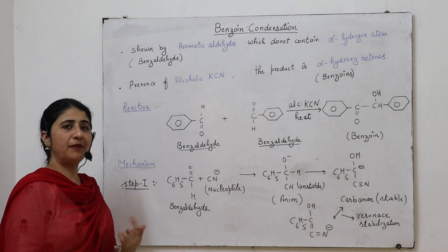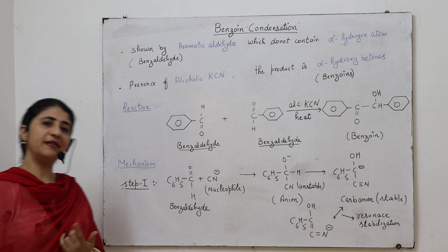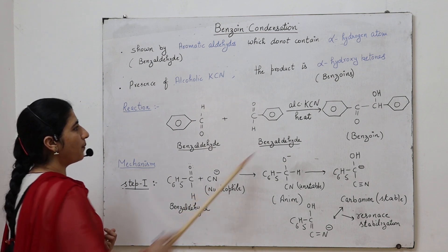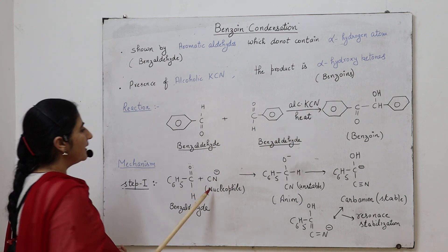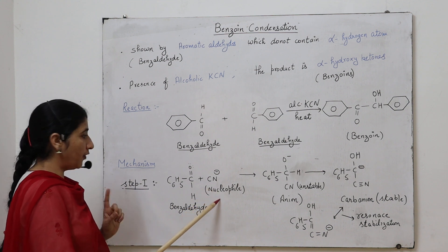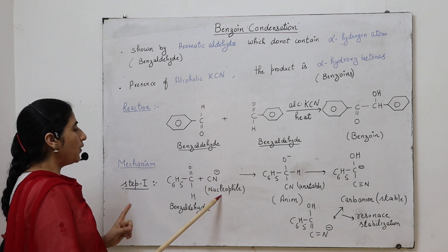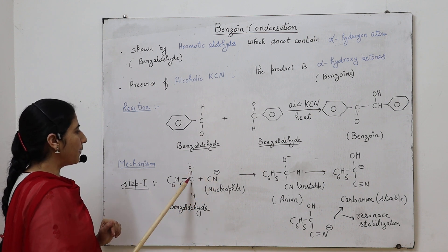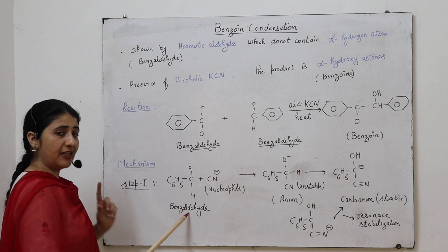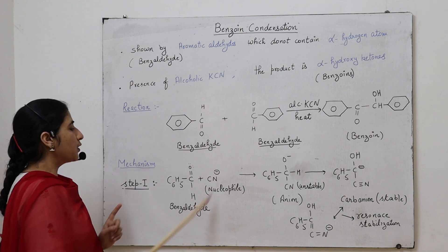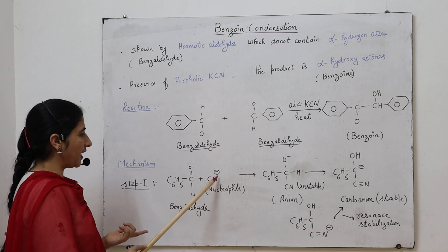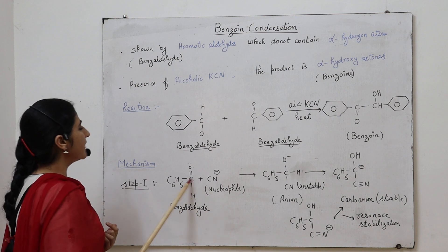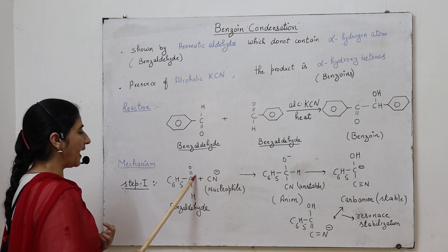What is the mechanism of benzoin condensation? It takes place in basically two steps. In the first step, CN⁻ obtained from KCN is negatively charged and acts as a nucleophile. This nucleophile adds to the carbonyl group of the first benzaldehyde molecule. Since the nucleophile is negatively charged, it has a tendency to attack an electron-deficient center.